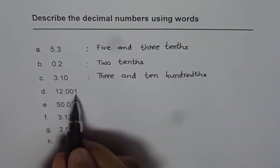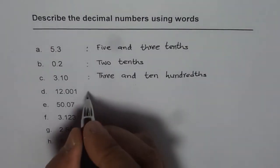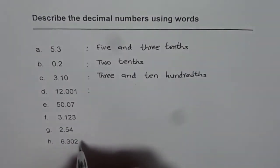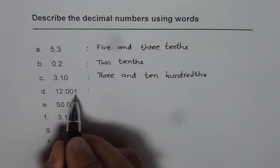Now we have 1 which is ending in thousandths position. So this should be written as 12 and 1 thousandths.